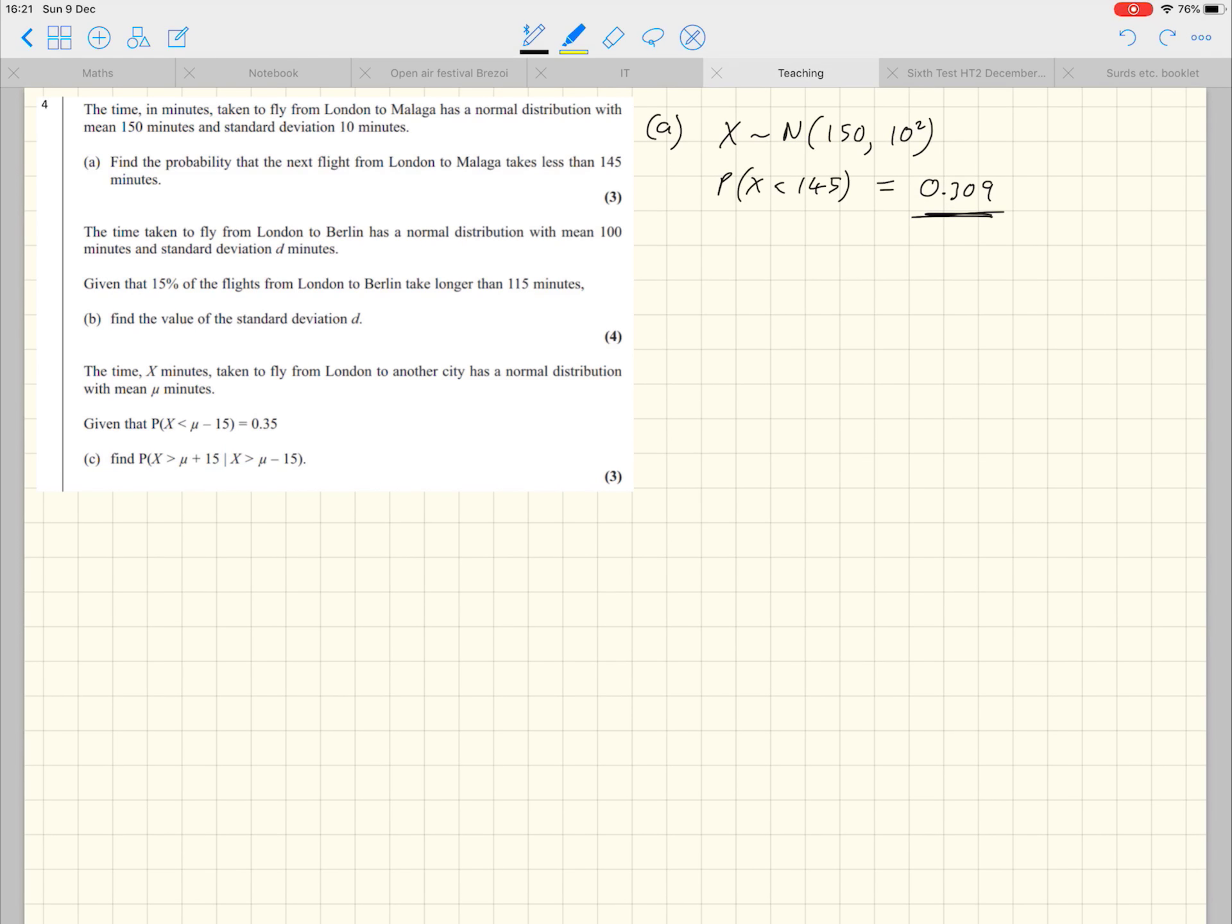I've written 10 squared because remember we always write the variance here. What I haven't written here and I probably should have is what X is, but I'll simply state X will represent the time in minutes that the next flight takes. The probability that the next flight takes less than 145 minutes, we can get straight out the calculator with those parameters and we get 0.309. That's a nice easy three marks.